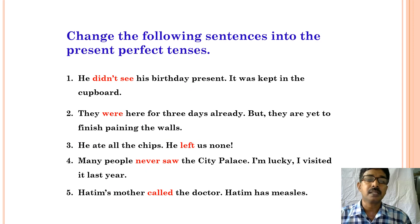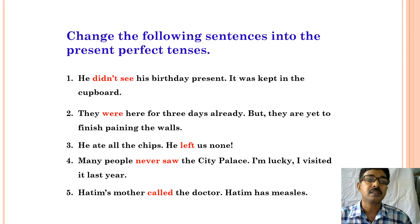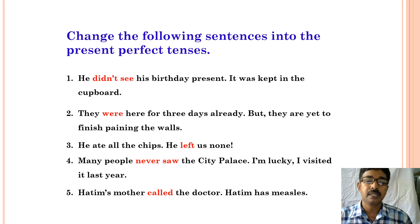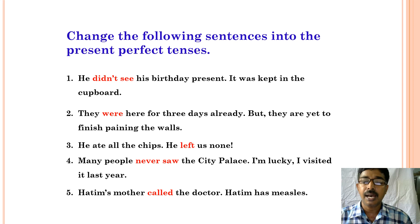Now children, we have seen the present perfect tense and present perfect continuous tense. Now change the following sentences into present perfect tense. First: he did not see his birthday present, it was kept in the cupboard. They were here for three days already but they had to finish painting the work. He ate all the chips and left none. Many people never saw the city palace — I am lucky, I visited it last year. Hamid's mother called the doctor; Hamid has measles.